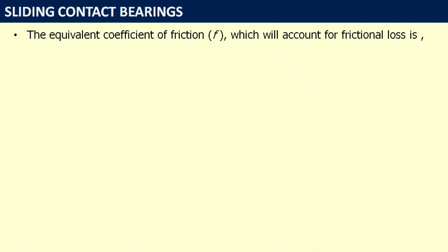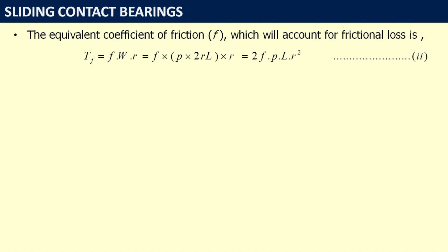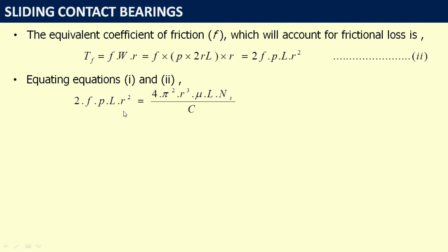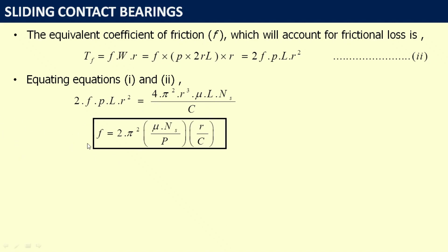The equivalent coefficient of friction f accounting for frictional loss is calculated by Tf = f·W·r, and substituting W from the unit bearing pressure equation gives Tf = f·p·(2rL)·r, which simplifies to 2f·p·L·r². Let us call this Equation 2. Equating Equations 1 and 2: 2f·p·L·r² = 4π²r³·μ·L·Ns/C. Simplifying and rearranging, the coefficient of friction f = 2π²·(μ·Ns/p)·(r/C).